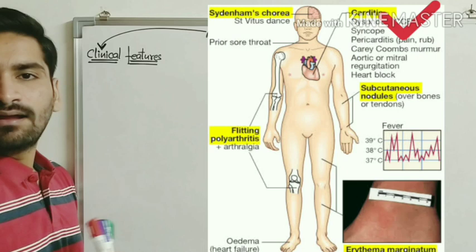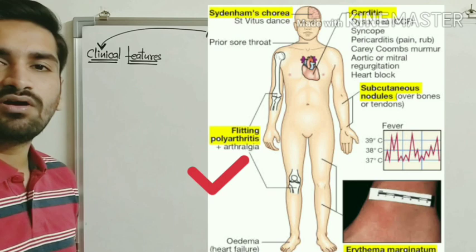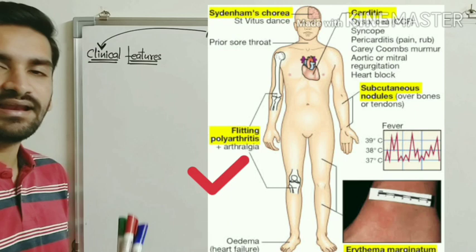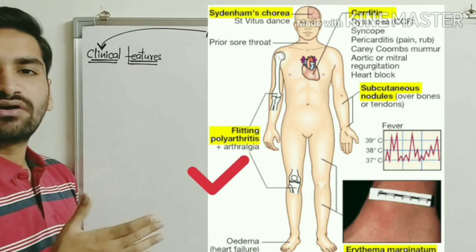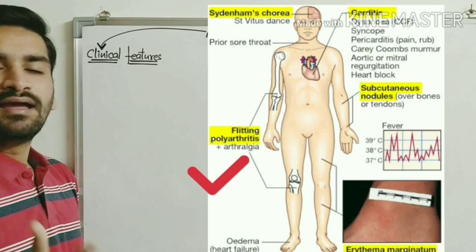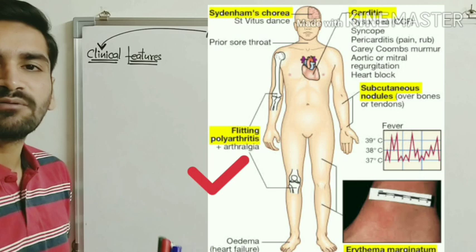Moving on to arthritis: it is polyarthritis, meaning more than one joint is involved in inflammation. The large joints most commonly affected include the ankle, knee, elbow, and wrist joints. These joints are involved in the acute phase in an unsynchronized manner — there is no particular pattern to which joint becomes involved.